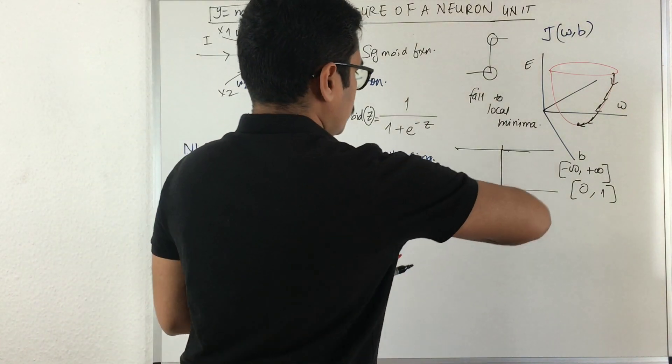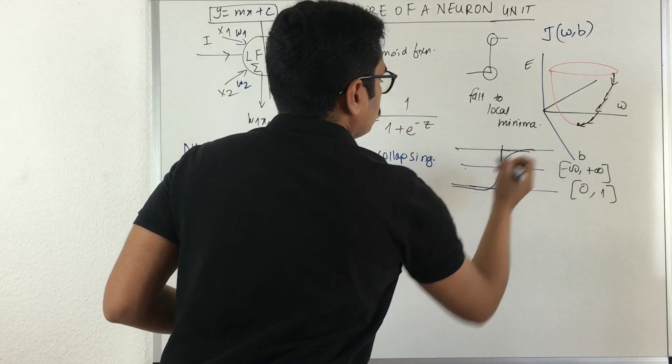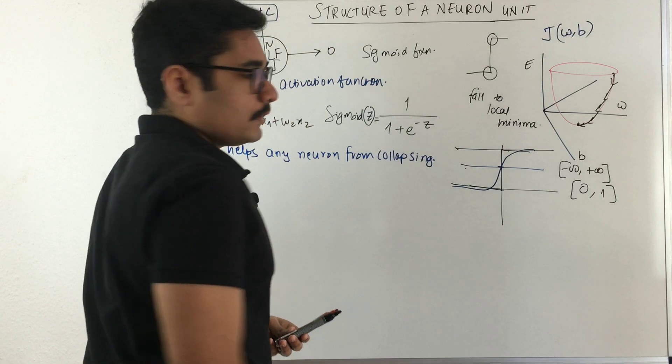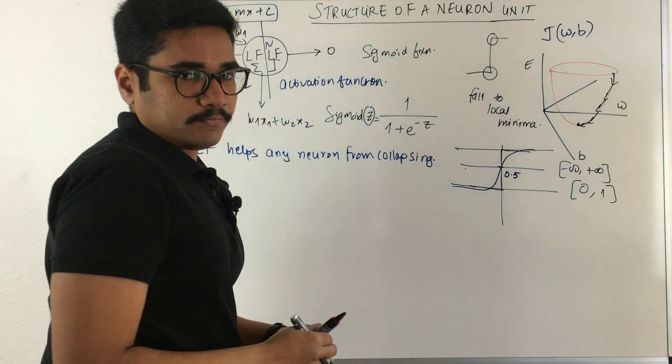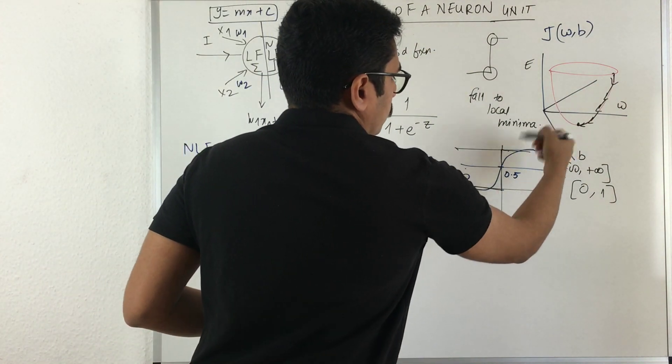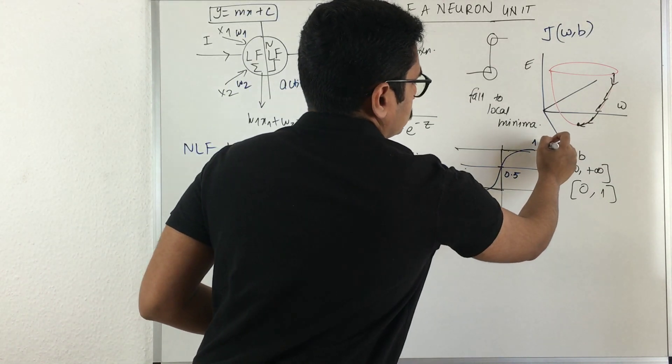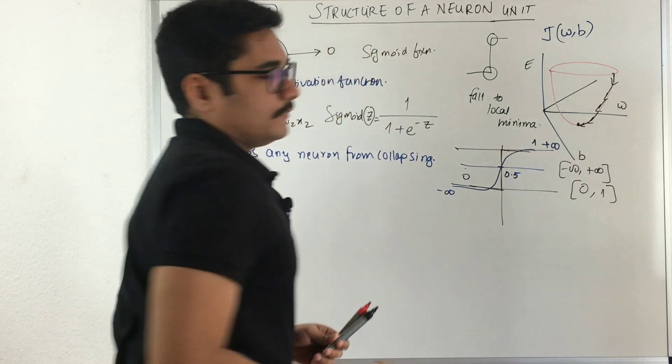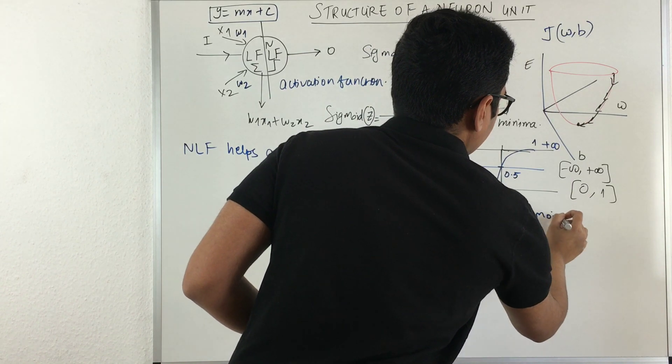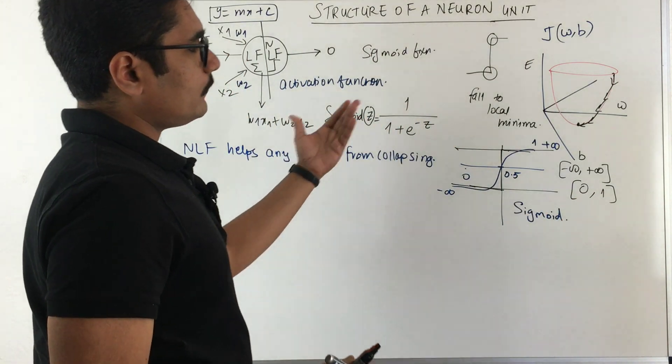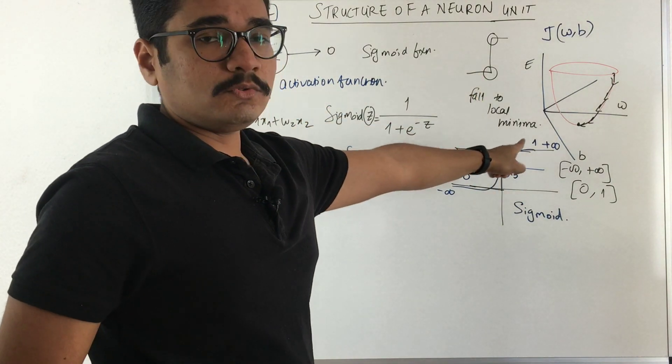Instead what we do is we try to squeeze this and say we have a threshold somewhere here. This is our 0.5 and for all values below this 0.5 we classify it as 0 and for all above we classify it as 1. It attains 0 at minus infinity and attains positive 1 at positive infinity. This is our sigmoid function that we basically use and further if you want to take the derivative of this then this becomes handy where if you use our step function then that will fall prey to local minima.